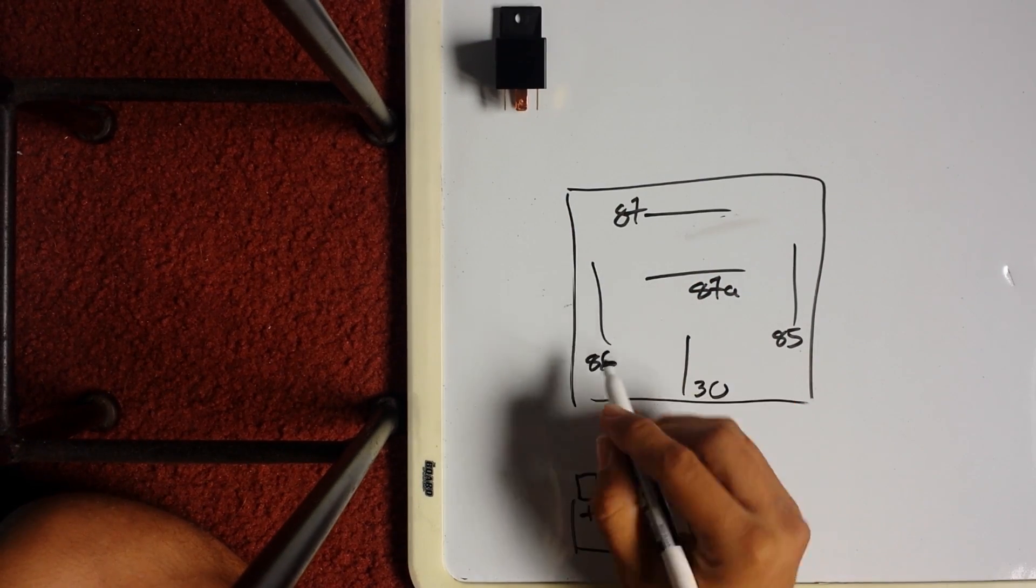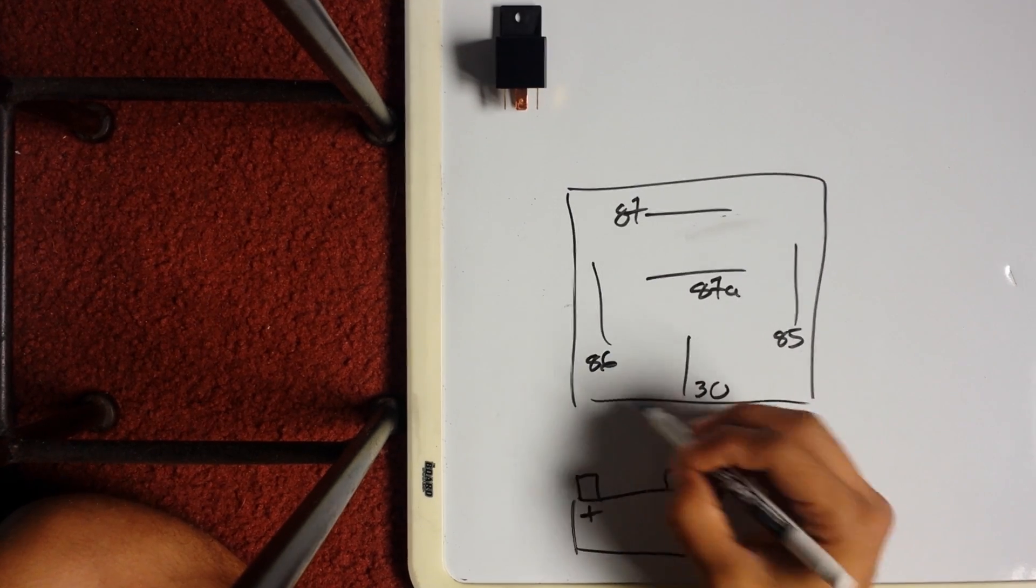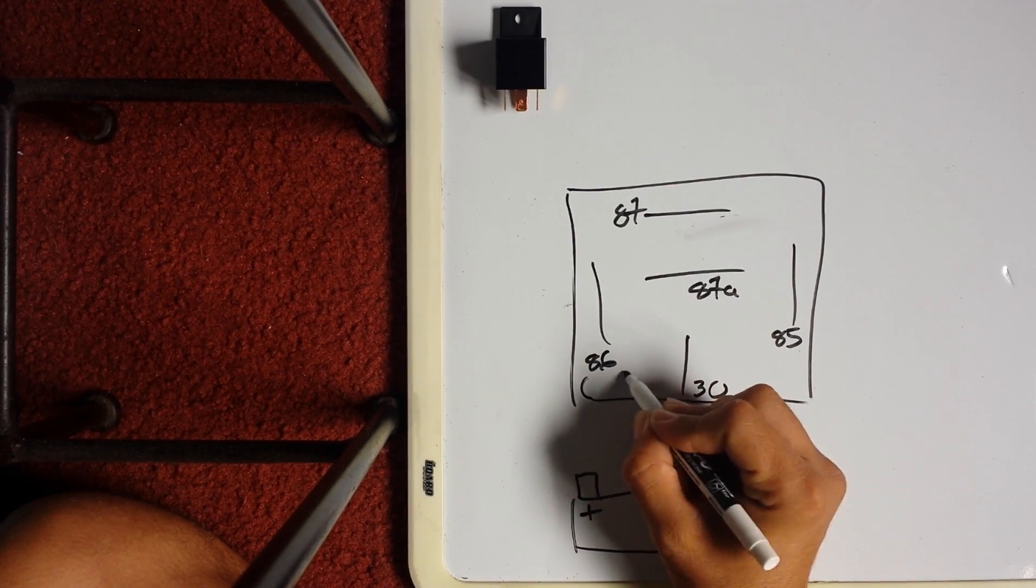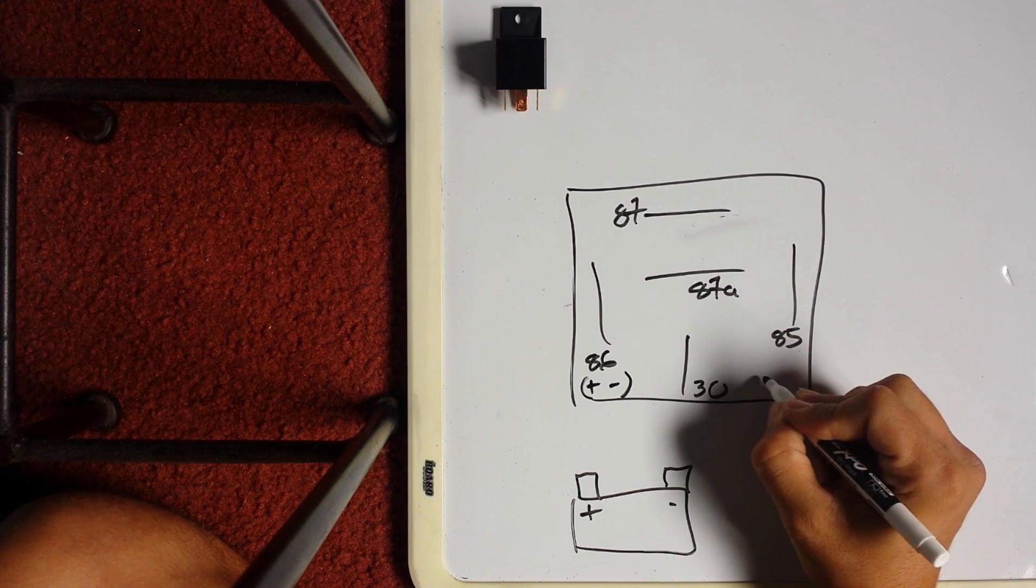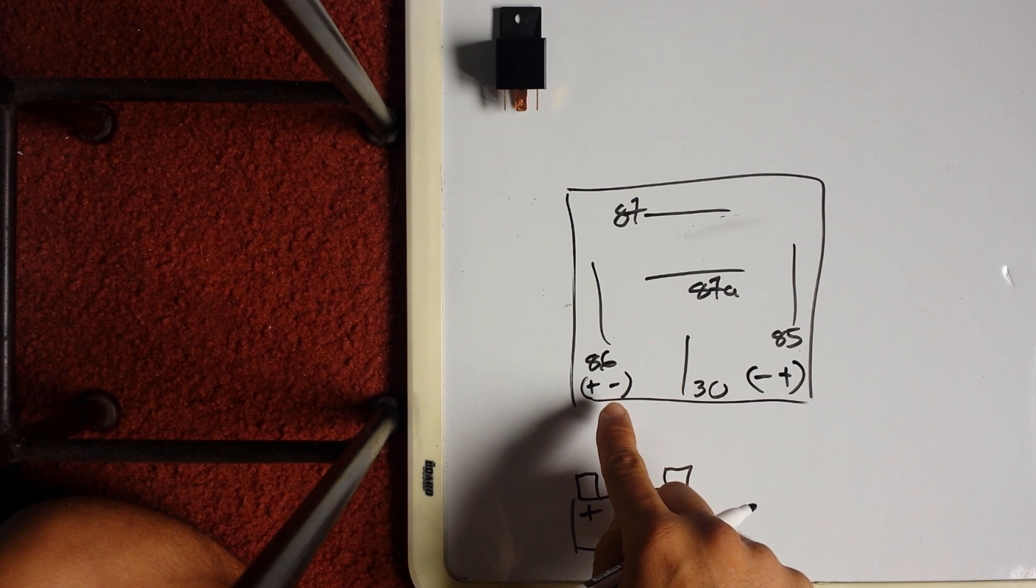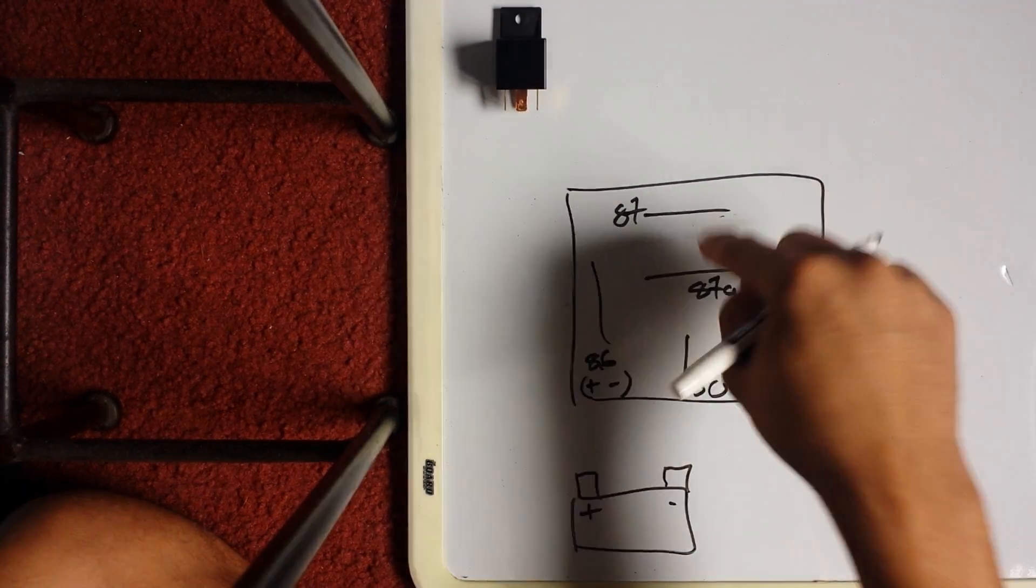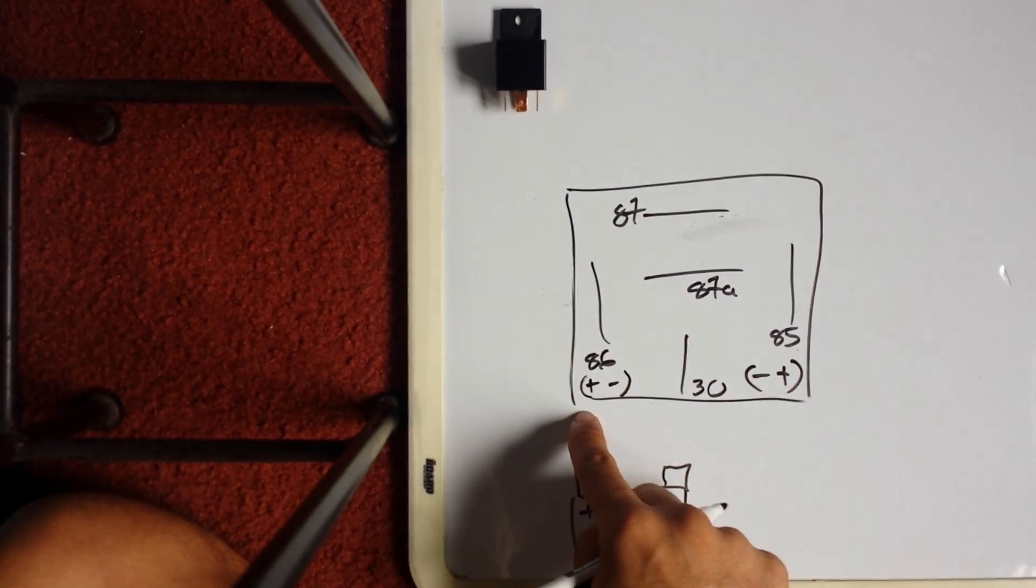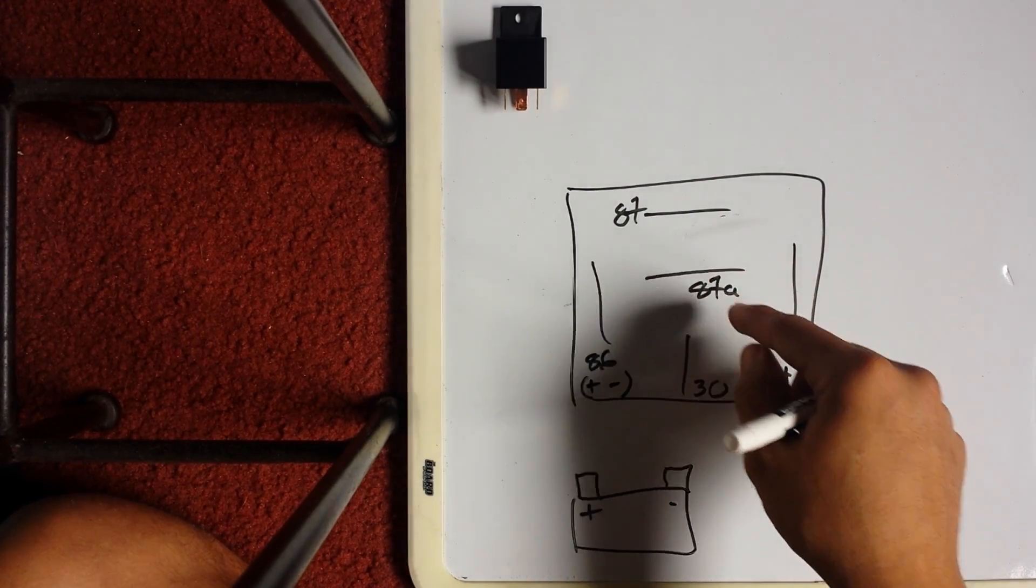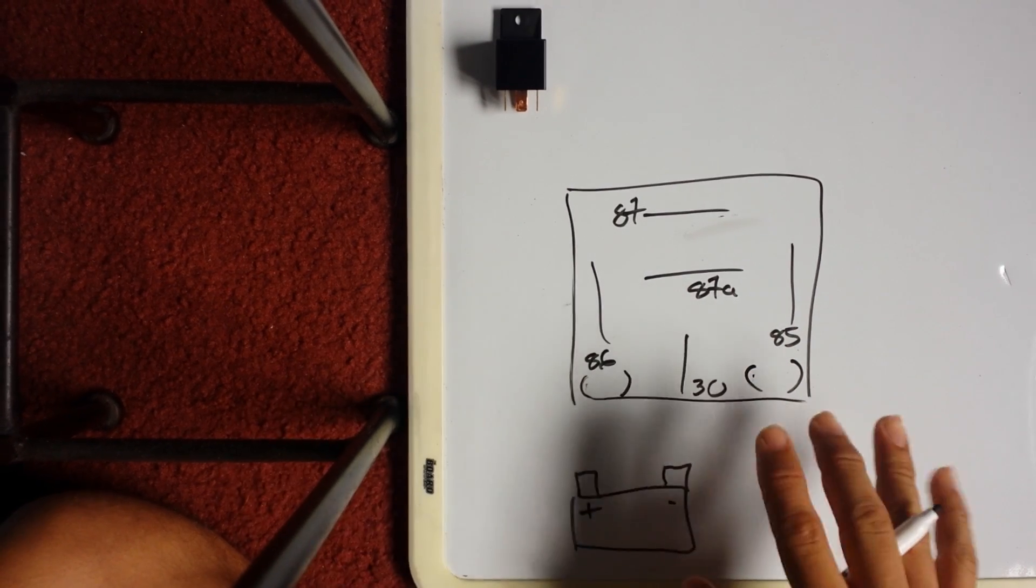So basically that's all you gotta do with the relay. Like the battery posts, you can consider these to be your posts right here to energize it. These can be either or, doesn't matter. So if you got negative here, you put positive here, this is gonna work. Positive here, negative here, this is gonna work.